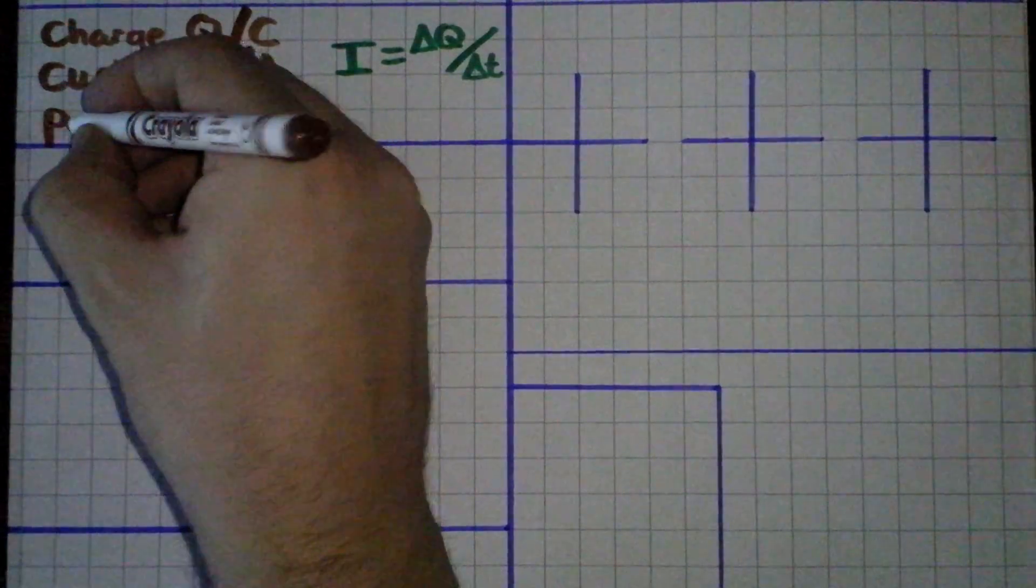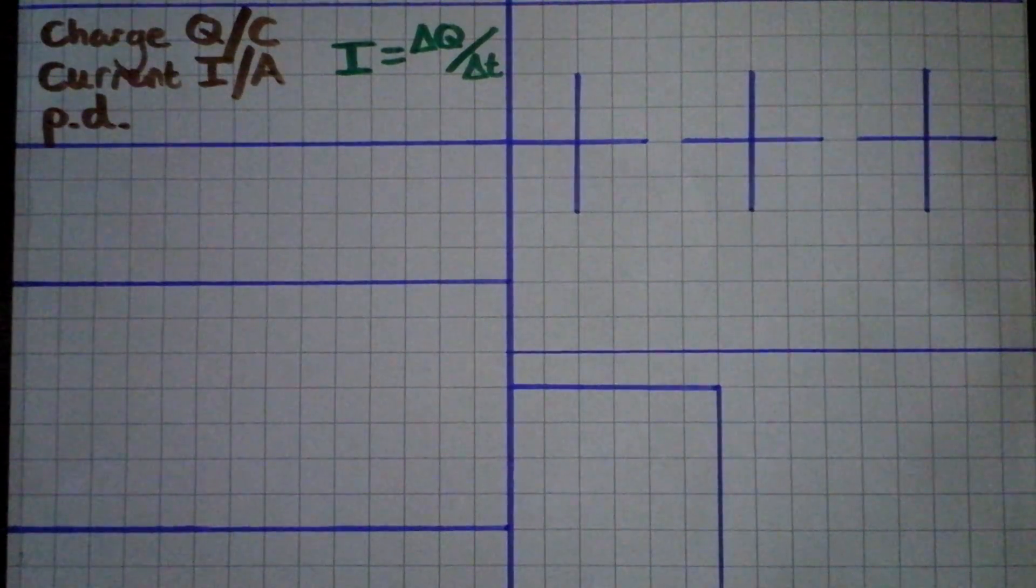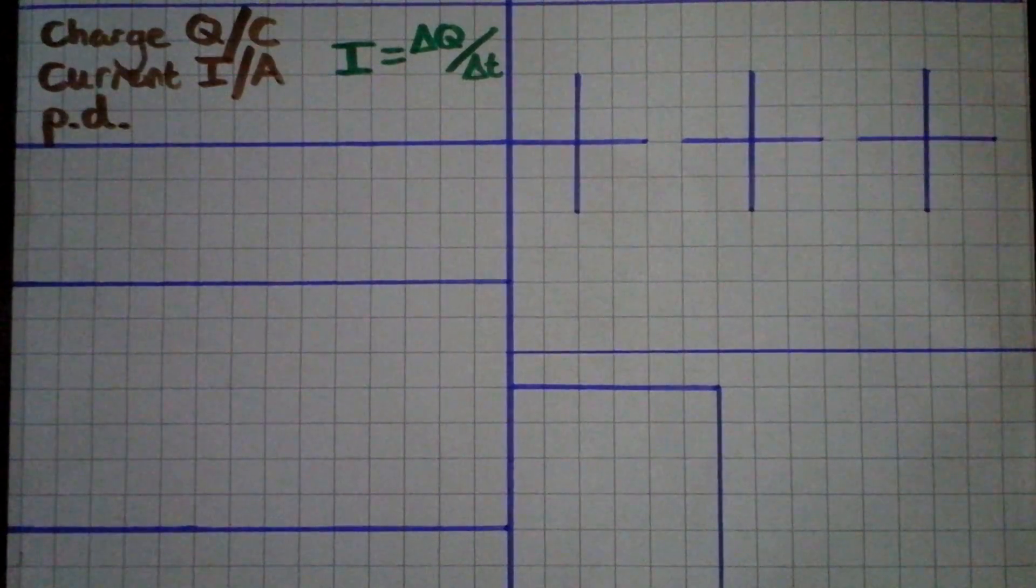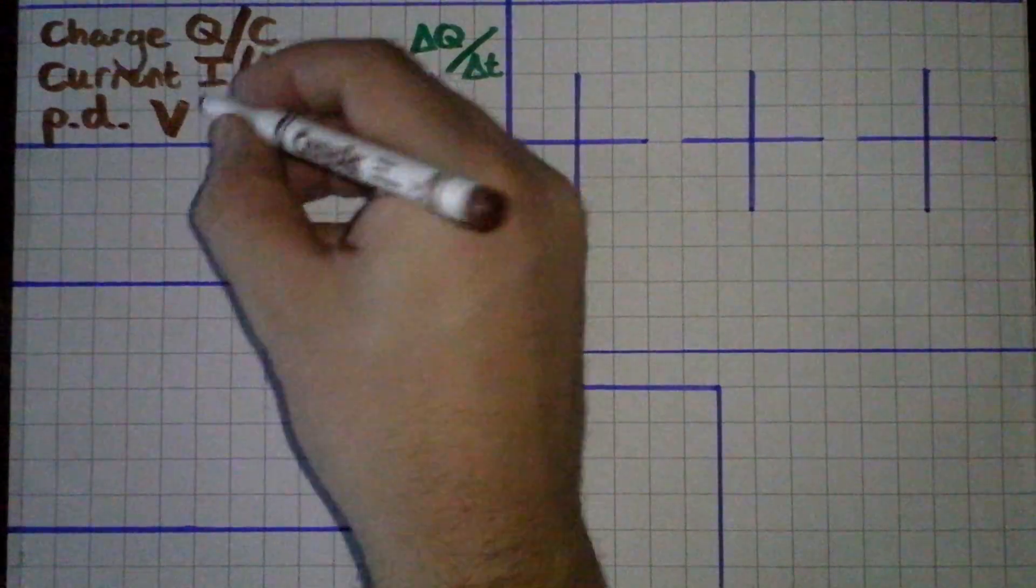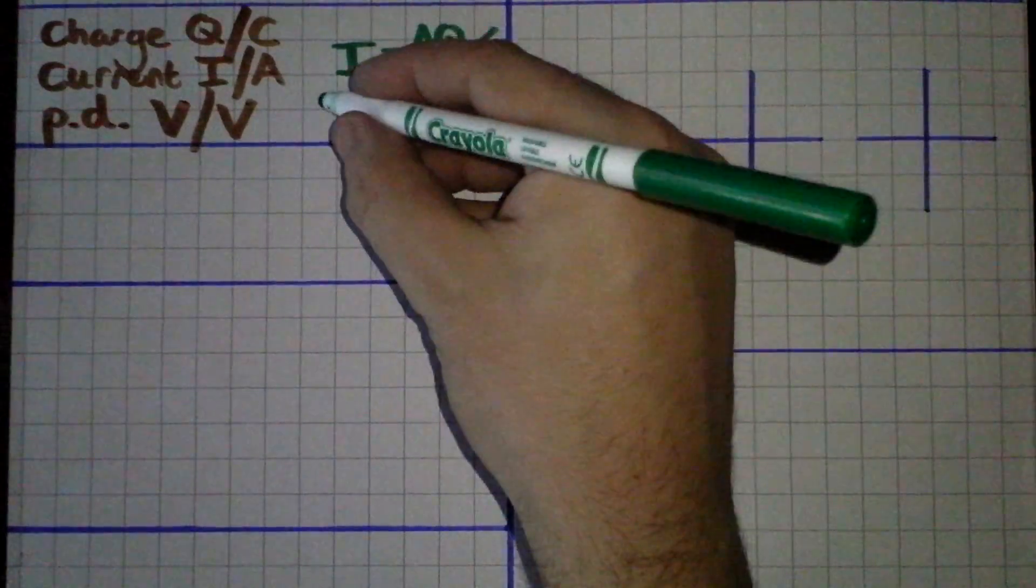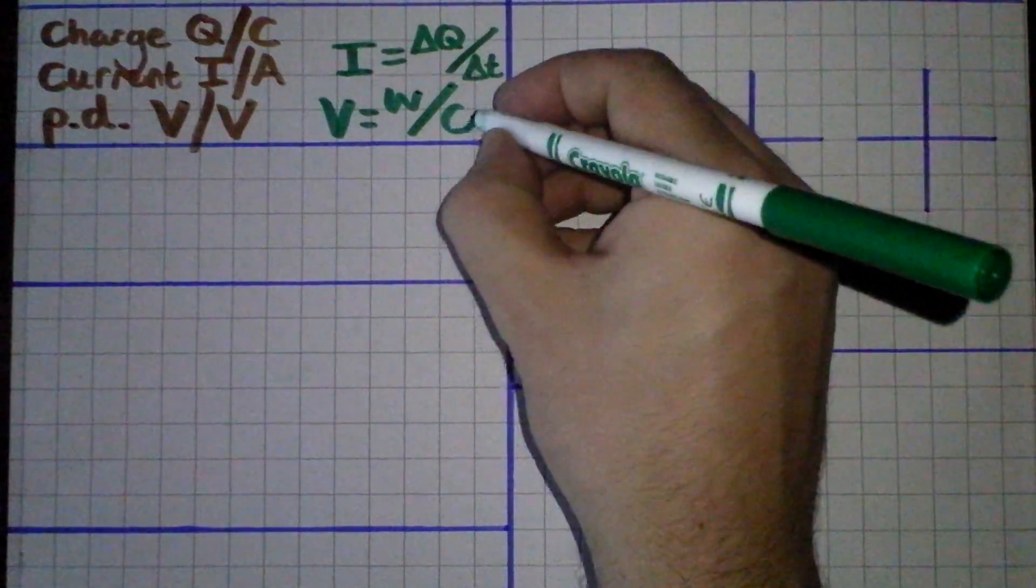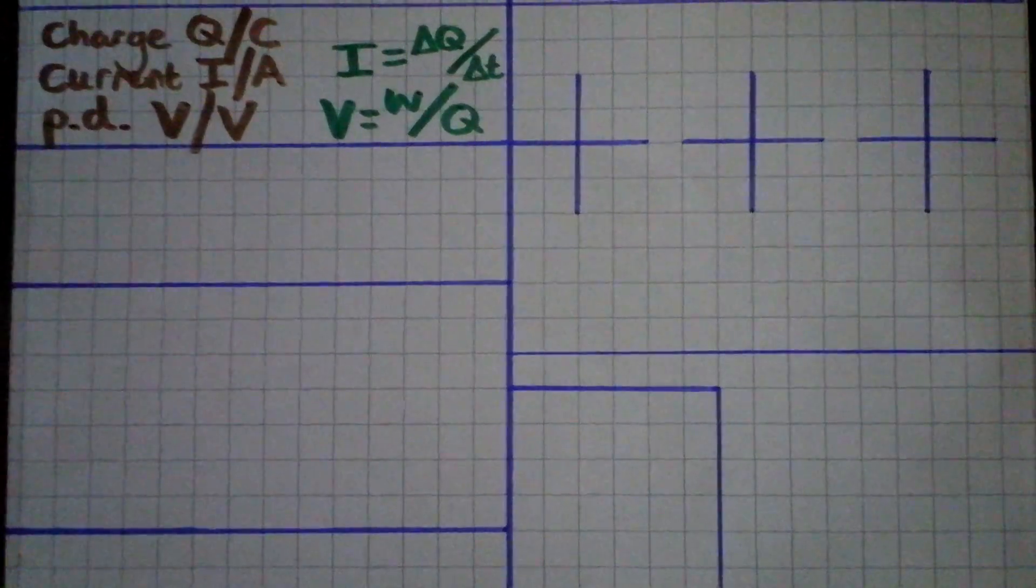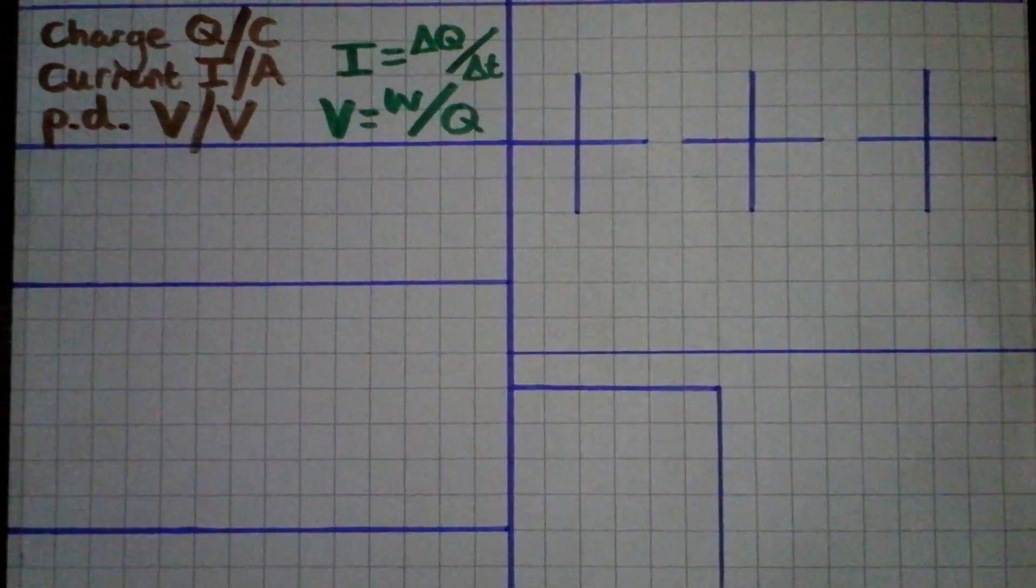To get a current to flow we need to give it a push. There needs to be a potential difference. A potential difference is to do with a difference in potential energy between one point and another, such that the electrons will want to flow. We can also call that voltage, it has a symbol V and is measured in volts. The definition of potential difference is the work done per unit charge, so how much energy does each Coulomb of charge have. That could be the work done by a battery or it could be the work done in a component in a circuit.